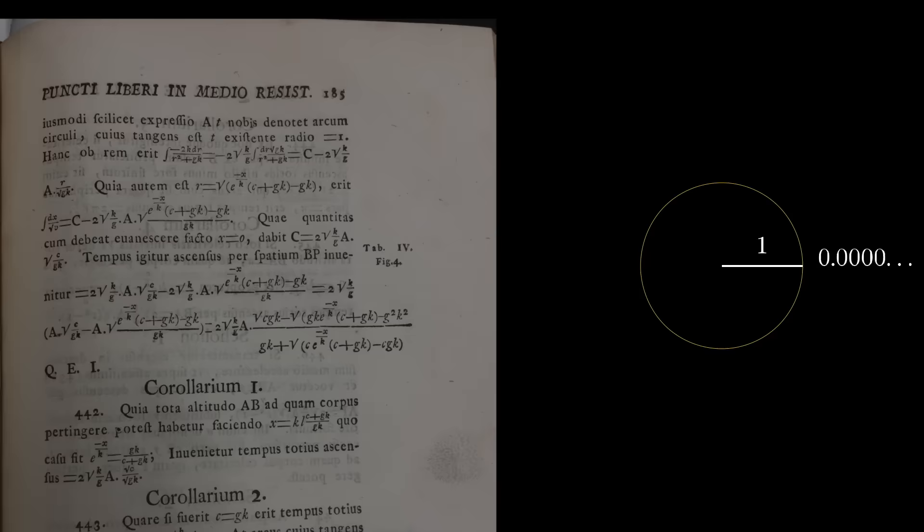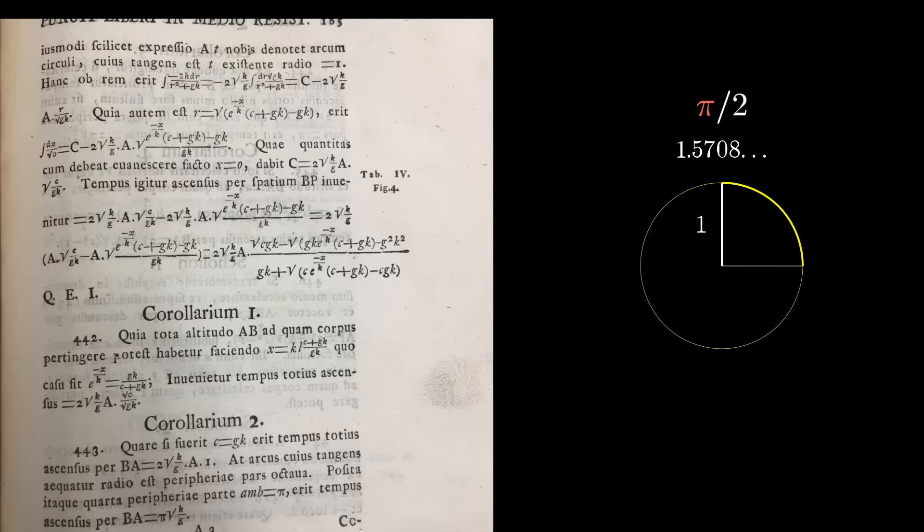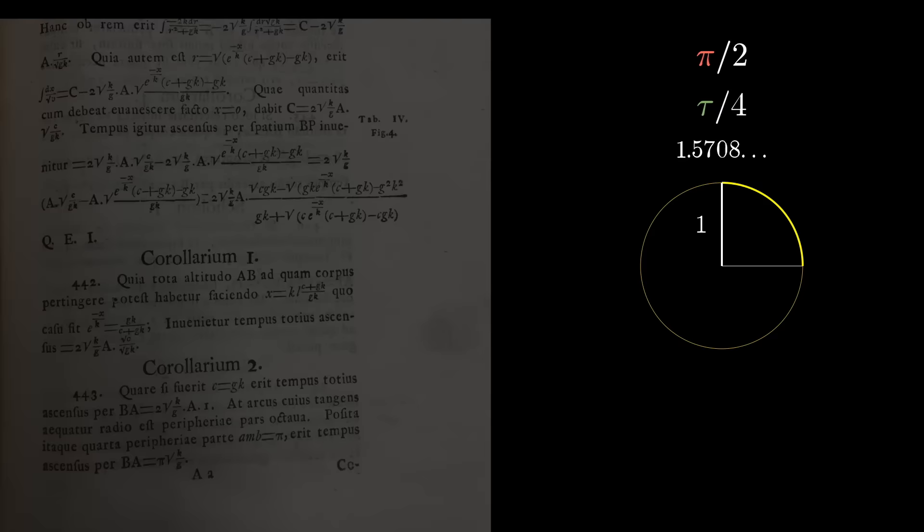So what monster wrote this book with such an unprincipled take toward circle constants? Well, Euler again. In fact, if you look further you can find instances of Euler using the symbol pi to represent a quarter turn of the circle, what we would call today pi halves or tau fourths.